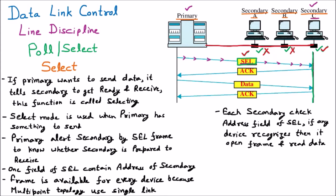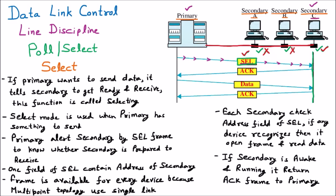If the secondary is aware and running, it returns an acknowledgement frame to the primary. The primary sent the select frame; all secondaries received it. The address matched with C. If C is awake — meaning alive and running — it will reply back with an acknowledgement. ACK is the positive acknowledgement, meaning 'Yes, I am alive and I want to receive the data.' This positive acknowledgement is sent back to the primary by the secondary.